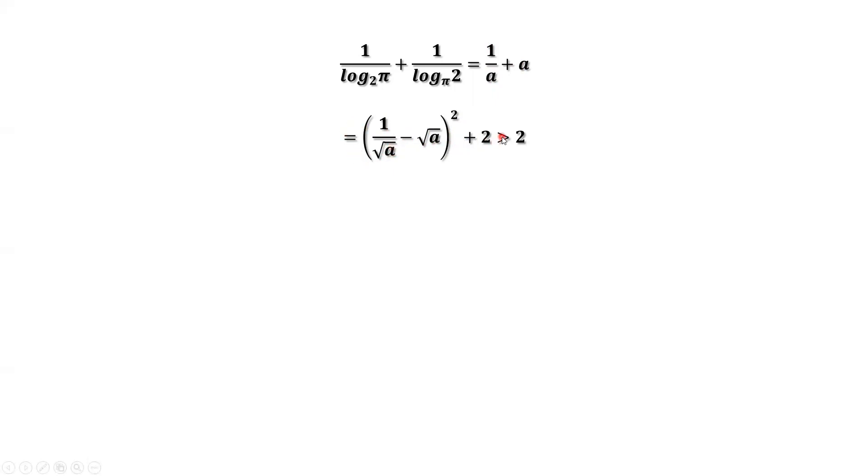Why it is bigger than 2? Because A is bigger than 1, 1 over square root of A minus square root of A is not 0. Therefore, this part is not 0. Its square is positive. Positive number plus 2 is bigger than 2.